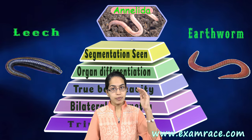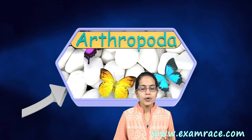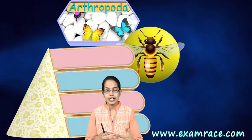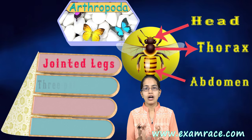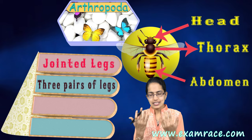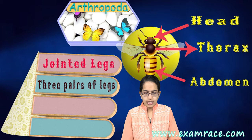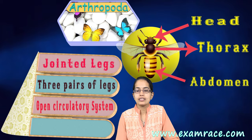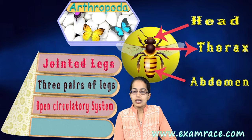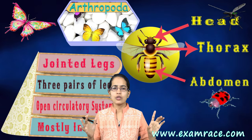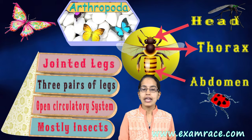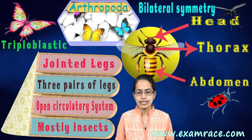Arthropoda is the largest group, making it very important. They have jointed legs, and the body is divided into head, thorax, and abdomen with three pairs of legs — six legs total. They have an open circulatory system, which is very important. Butterflies, insects, and mosquitoes are all examples of arthropoda. They are triploblastic and bilaterally symmetrical.